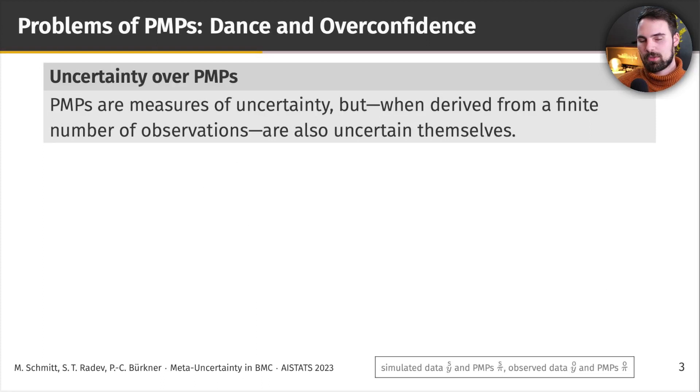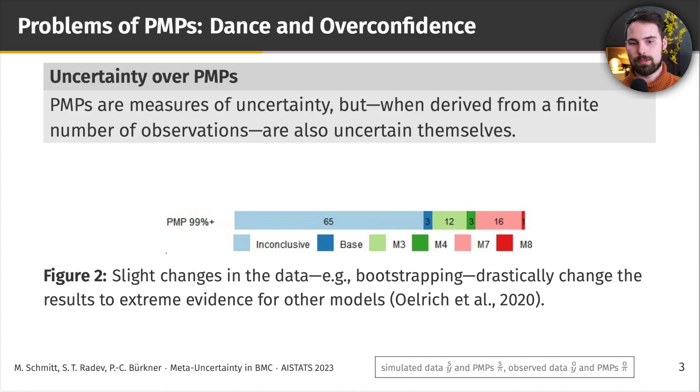So posterior model probabilities are nice, and they have desirable properties such as consistency. But, as I have stated in the introductory quote, posterior model probabilities are measures of uncertainty, as we've established earlier. But, when we compute or derive those posterior model probabilities from a finite number of observations, they still contain epistemic uncertainty themselves.